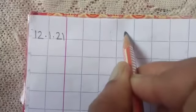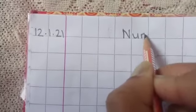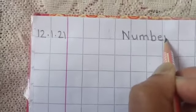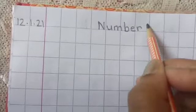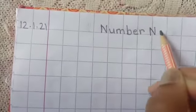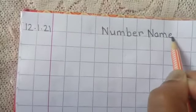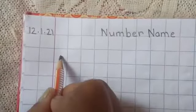So we start with today's date first, that is 12 dot 1 dot 2021, 12 January 2021. Then leave three boxes and write NUMBER NAME. Then leave one line near to the margin line.